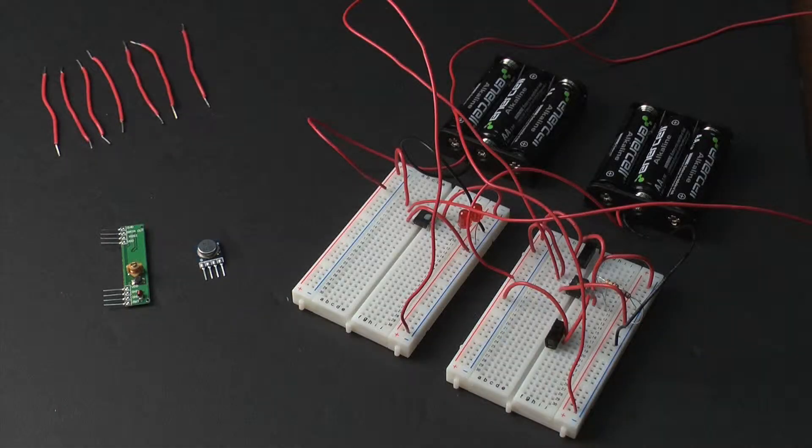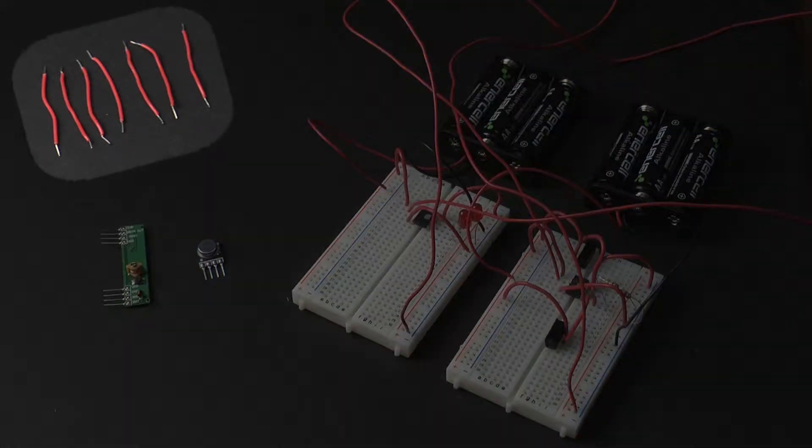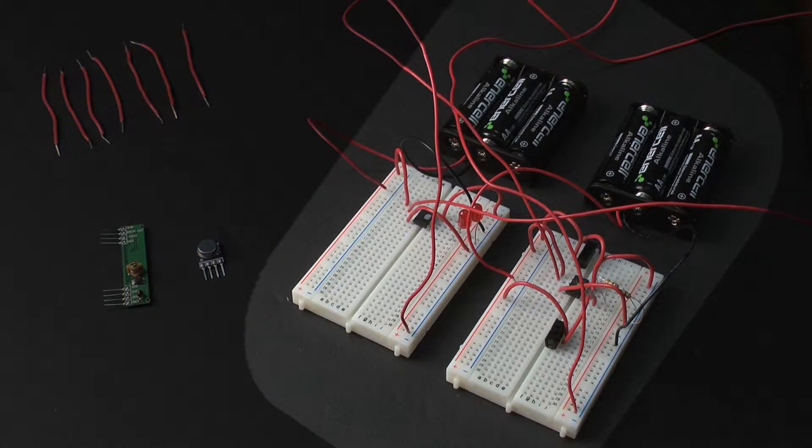For this activity, each group of students should be provided with the following: an RF transmitter chip, an RF receiver chip, seven two-inch jumper wires, and the wired communication system the students built in the previous activity.